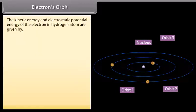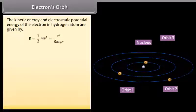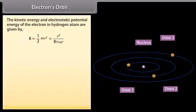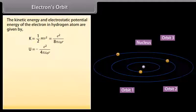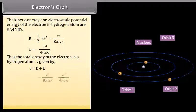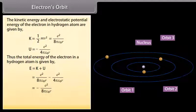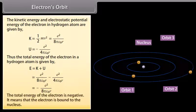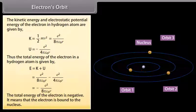The kinetic energy and electrostatic potential energy of the electron in a hydrogen atom are given by K = ½mv² = e²/(8πε₀r) and U = −e²/(4πε₀r). Thus the total energy of the electron in a hydrogen atom is E = K + U = −e²/(8πε₀r). The total energy of the electron is negative, meaning the electron is bound to the nucleus.